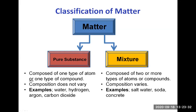Mixtures are when you have two or more types of atoms or compounds mixed together. Basically, when you have at least two pure substances together, they form a mixture. It can be a mixture of elements, a mixture of compounds, or a mixture of elements and compounds together. The composition varies, so you can have more or less of one compound versus another. You cannot give a formula to a mixture — only the formulas of the pure substances that compose it, plus proportions or percentages for each.